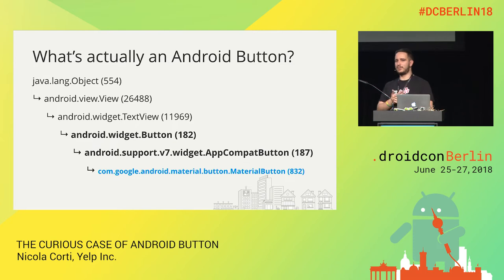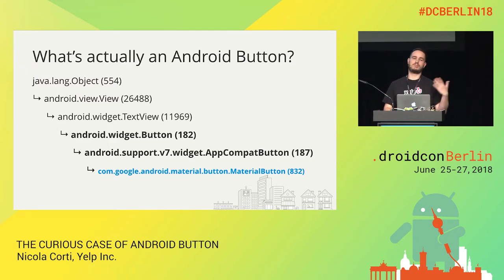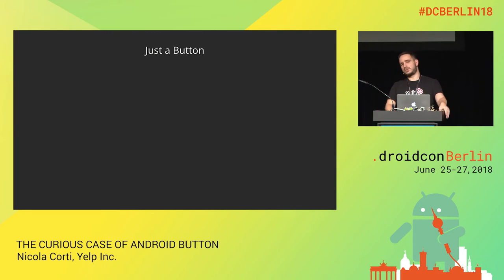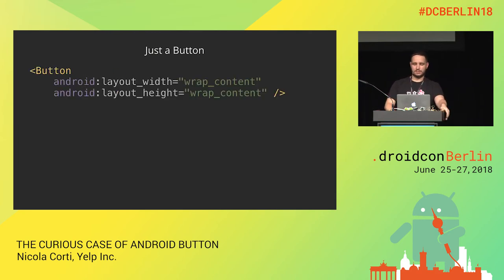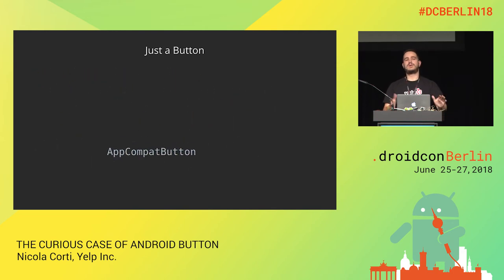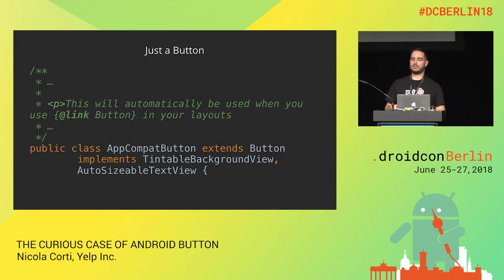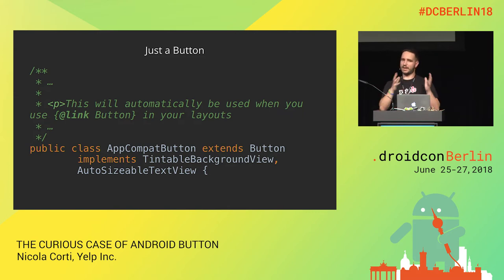In the new Material Components Library they introduced a new component called MaterialButton — which is a subclass of AppCompatButton and still only about 800 lines of code. Nothing really magic. Button and AppCompatButton can be considered the same thing, because when you drop a button in your layout and set width and height, writing Button is equivalent to writing AppCompatButton — specifically if you're using the support library. If your activities are AppCompatActivities, the button will be automatically injected. So we're going to focus on Button and consider them the same family of widgets.